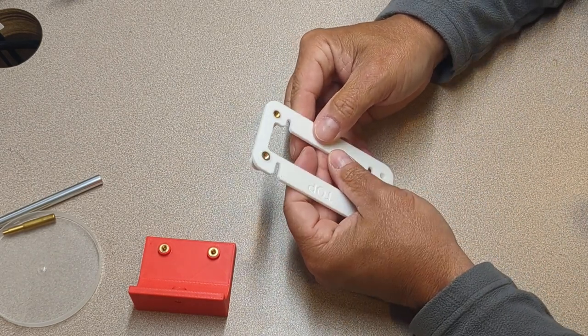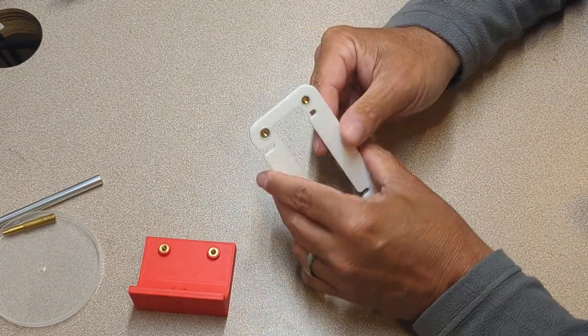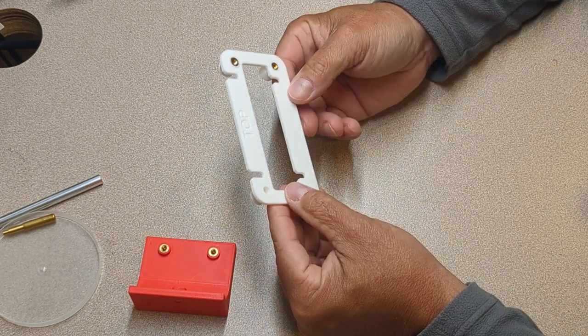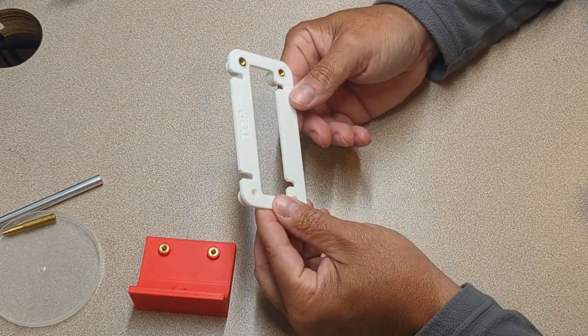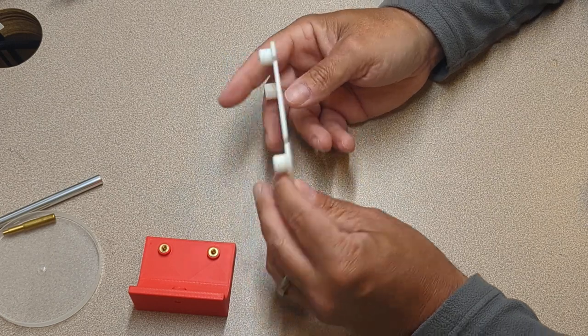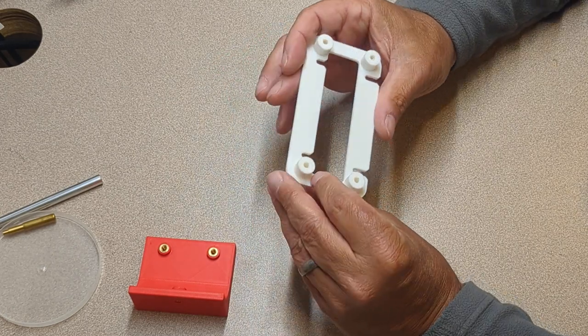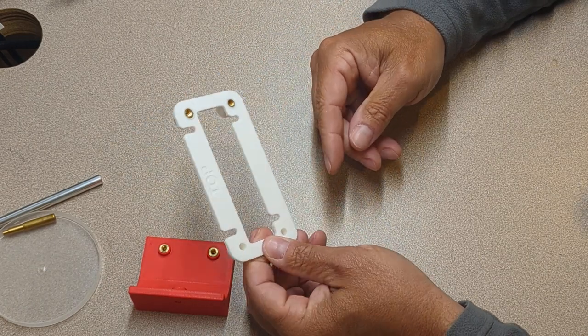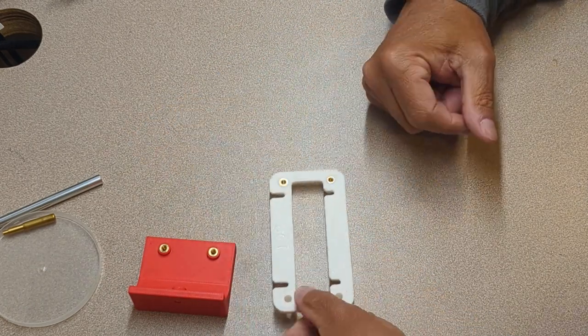You've got brass threads in your 3D printed part so this is a part that's going to be able to be installed and removed a number of times. Threads are going to be nice and strong and should not cause any problems for you later on. Okay all right thank you.